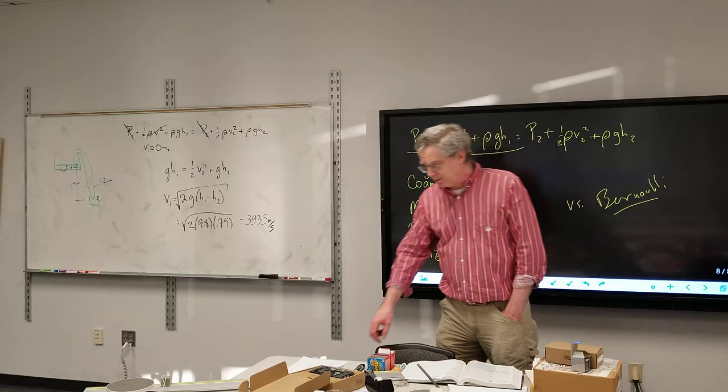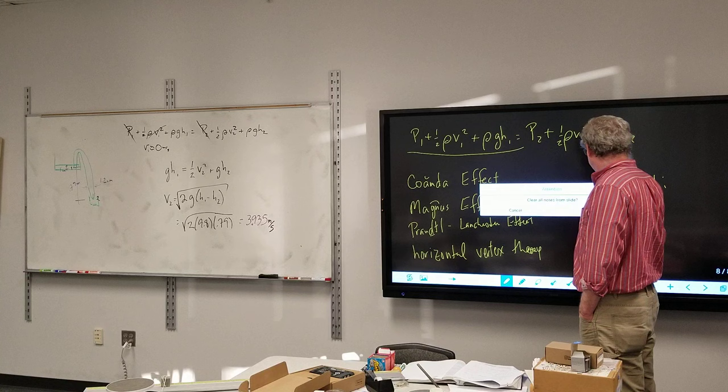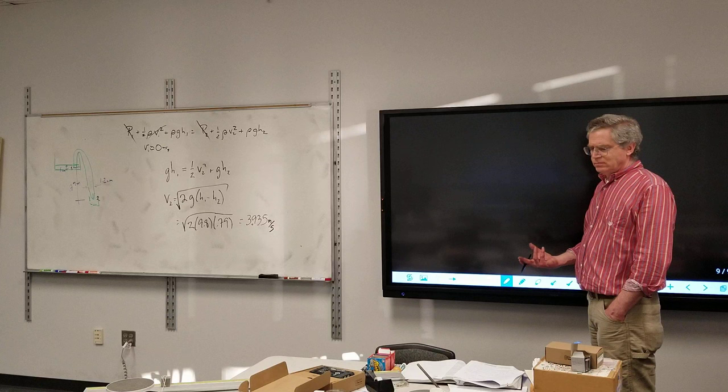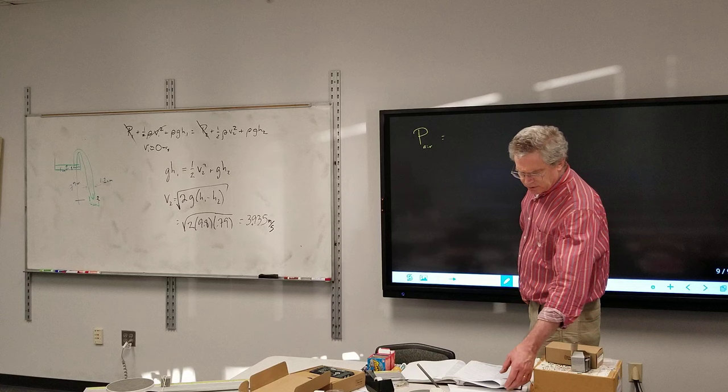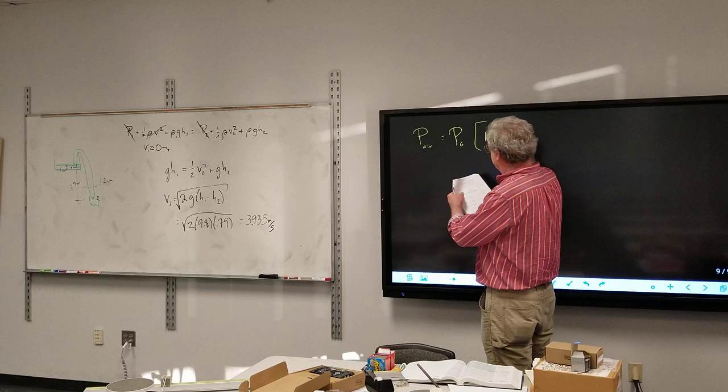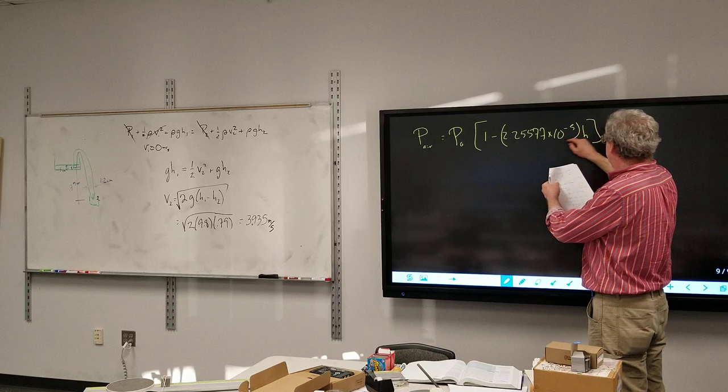So what is the formula for the air pressure with elevation? Fortunately, I looked it up. I suspect it was found experimentally as opposed to derived. It was an engineering site, so odds are it was found experimentally. For the air pressure at 20 degrees Celsius, it is equal to the atmospheric pressure times (1 minus 2.25577 times 10 to the negative fifth times the elevation), that one minus that raised to the 5.25588.